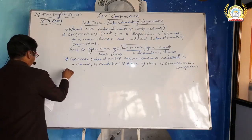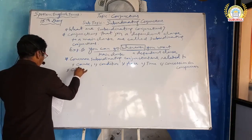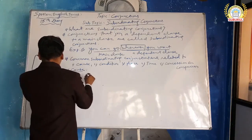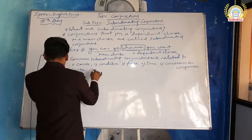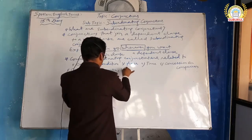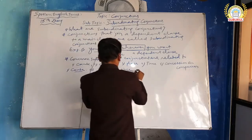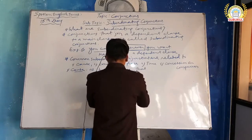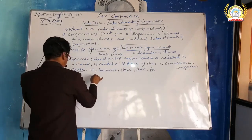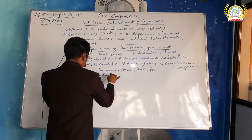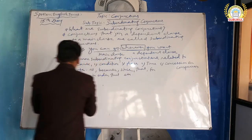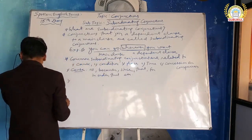Let us see them one by one. Number one: cause. In this category, conjunctions are: because, since, that, in order that.